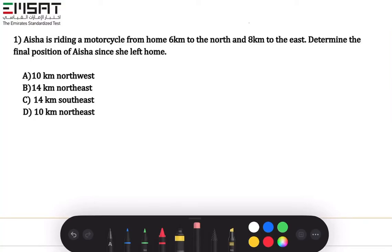Aisha is riding a motorcycle from home six kilometers to the north and eight kilometers to the east. Determine the final position of Aisha since she left home.